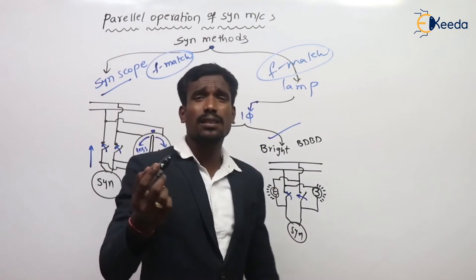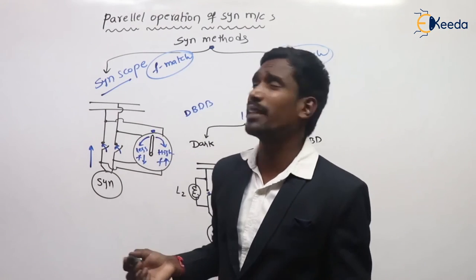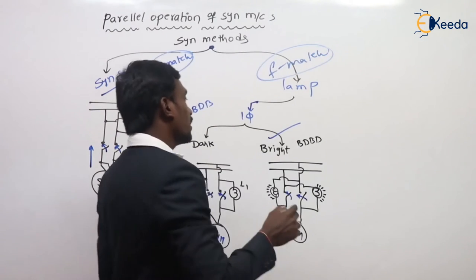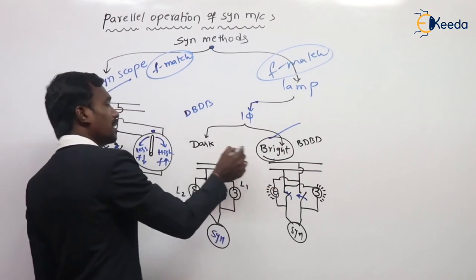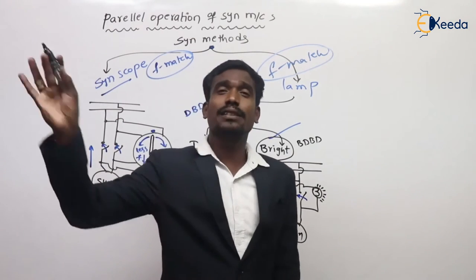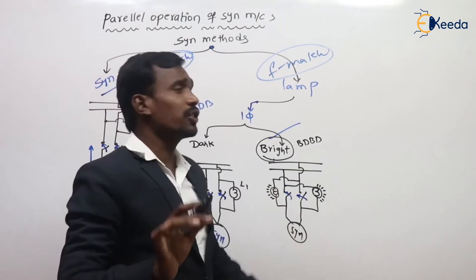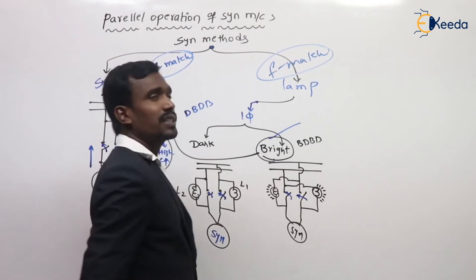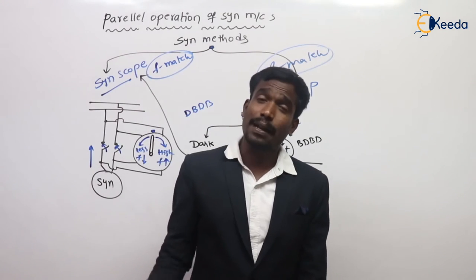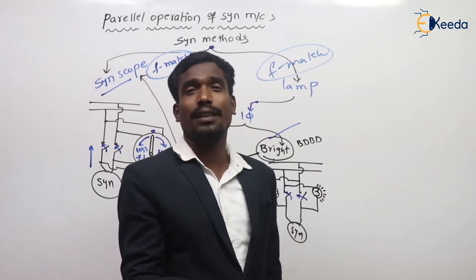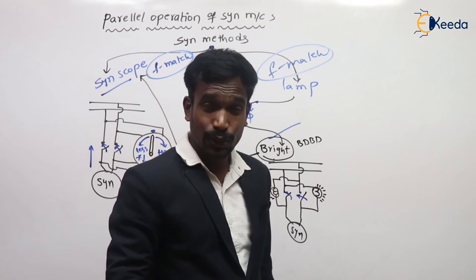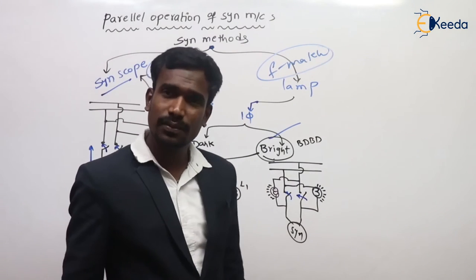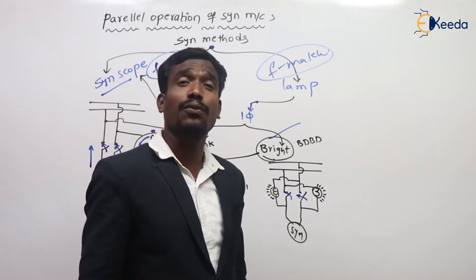The answer to which method we use today: generally the bright lamp method is better than the dark lamp method because of easy judgment. Nowadays we use the bright lamp method in combination with the synchronoscope method — bright lamp method plus synchronoscope method combined. This completes the synchronization method for single phase. Let's go to the synchronization method for three phase.